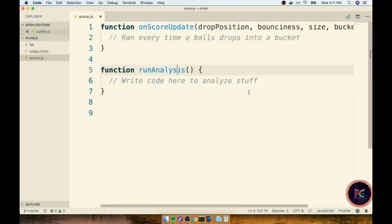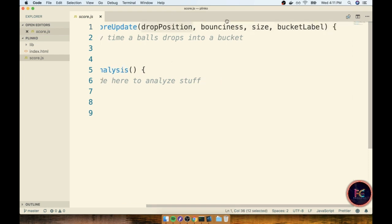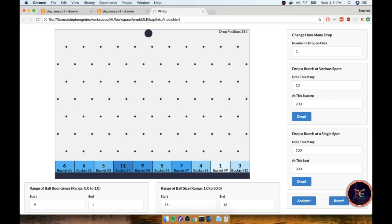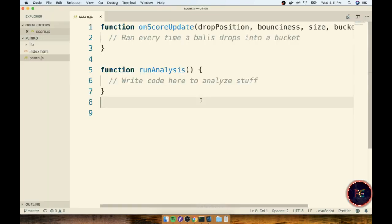Now inside of here you're going to see that there are two functions that have already been defined. The first function is called onScoreUpdate. This is a function that I created, I wired up this application for us to use. Anytime that a ball falls into a bucket, onScoreUpdate will be called with the drop position of the ball, its bounciness, its size, and the label of the bucket that it fell into. So is it bucket 1, 2, 3, 4, 5, 6, 7, 8, 9, 10, all these different buckets down here. So again every single time a ball falls into a bucket this function gets called.